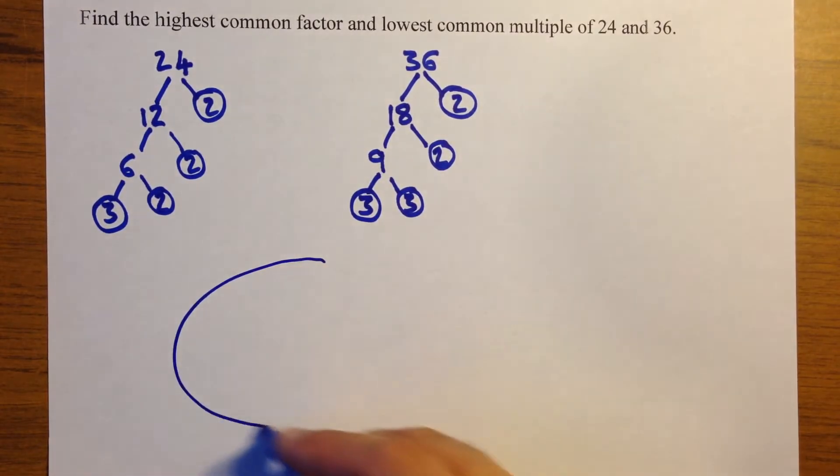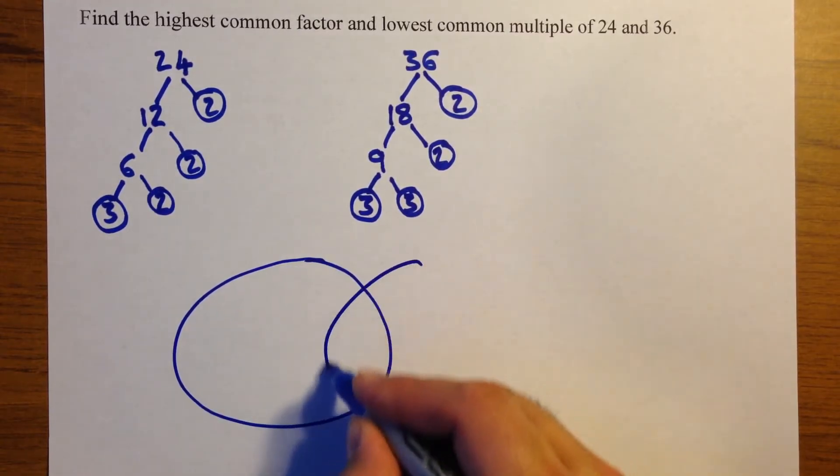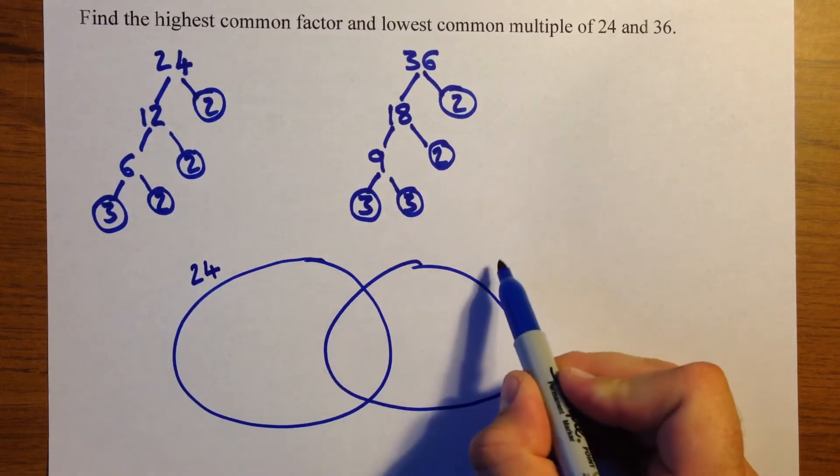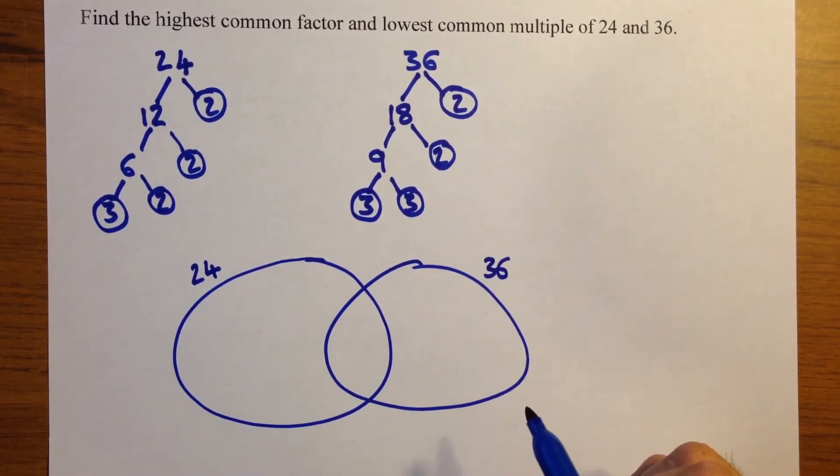Now we're going to use a Venn diagram which is two overlapping circles. One labelled 24 and one labelled 36.